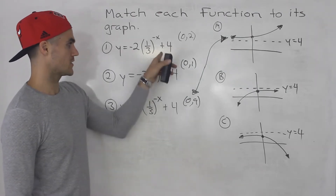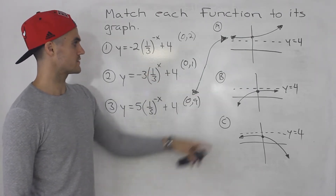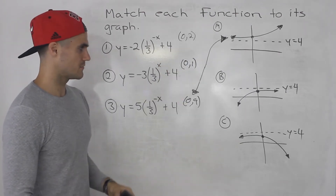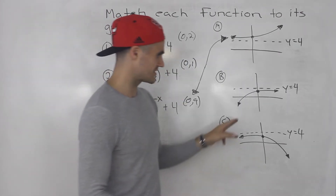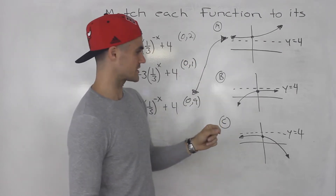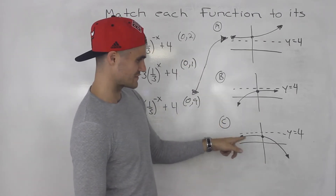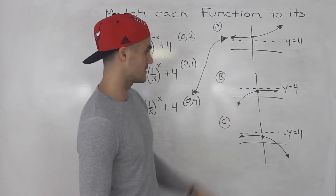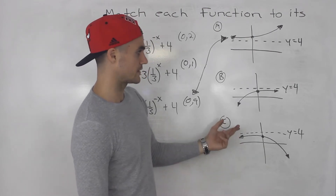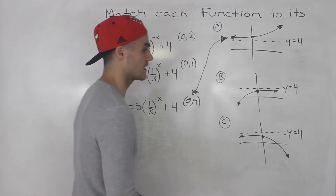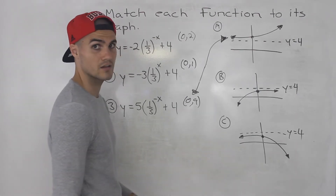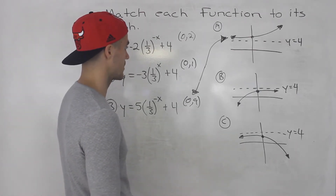Now we just have to match one of the remaining functions to one of the remaining graphs. Unfortunately we can't use the y-intercept here because with these graphs the y-intercepts of 2 and 1 are so close together it's tough to tell which graph has which. These graphs are not to scale, so we're going to have to use a different method.